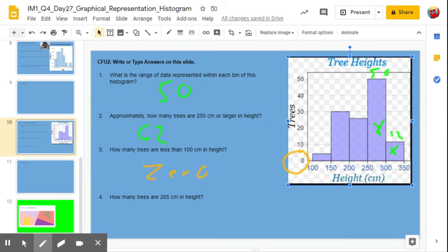How many trees are 265 centimeters in height? Oh, well, isn't that going to be in this bin here? Yes, it is. But can we say it's going to be 50?